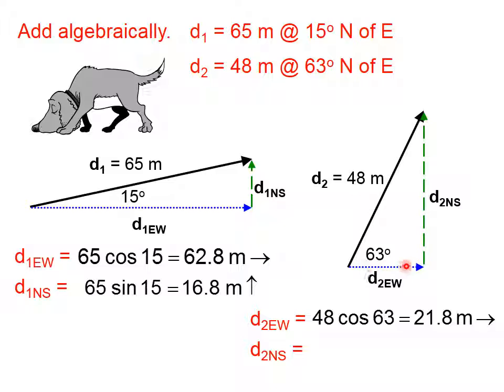We're going to do the same thing with the two components of this second vector. The east-west component of vector d2 is going to be found by taking 48. This is the adjacent leg of the triangle, so we're going to use cosine, 21.8 meters east. Similarly, this green vector is going to be found by taking 48 times the sine of 63, which is 42.8 meters north. That's the first step. We need to take all the vectors that were given and break them into components.